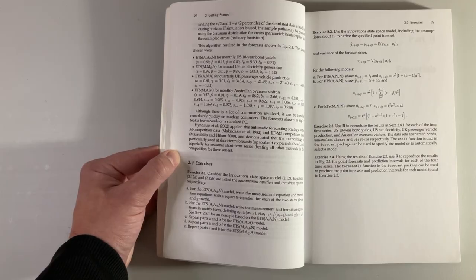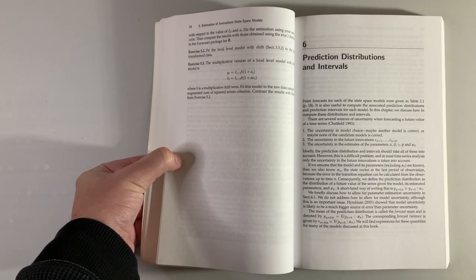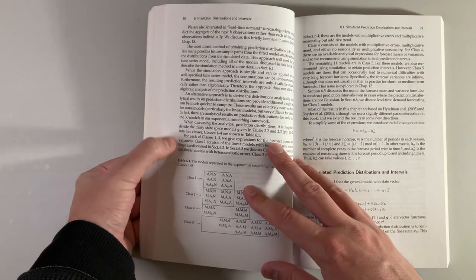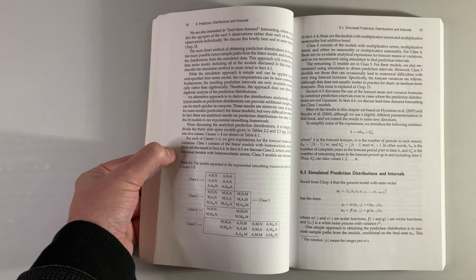Sections end with exercises. When you set exponential smoothing on a statistical framework, you get prediction distributions for free. Authors dedicate a full chapter on how these prediction distributions are generated.